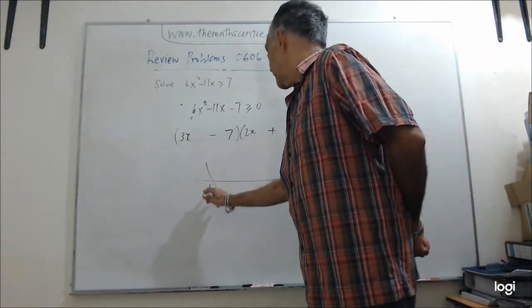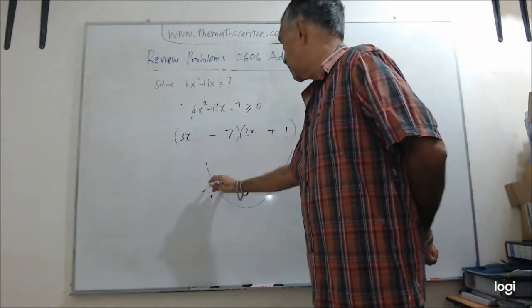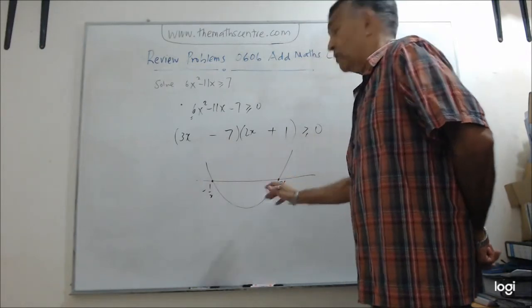This will be -1/2, that's from here, right? -1/2. And then we have got 7/3. That'll be the next step.